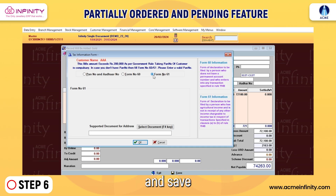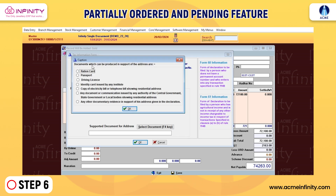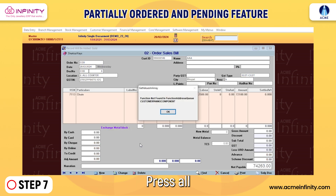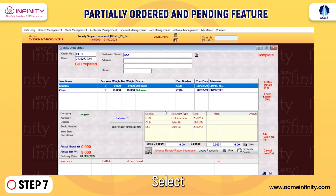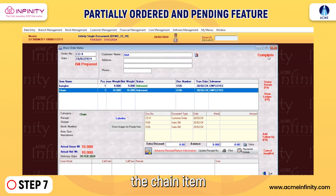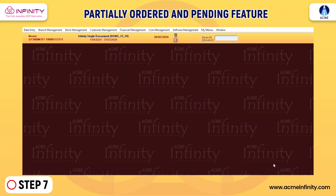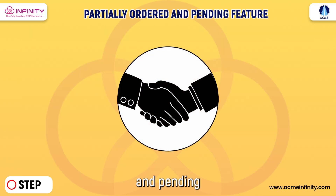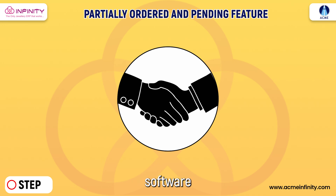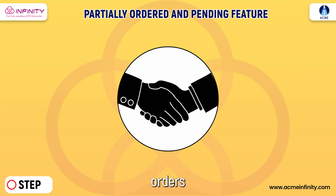Step 7: Press Alt+O, enter the order number — for example, GO9 — select the chain item, and complete the order. The partially ordered and pending feature in Acme Infinity Jewelry ERP software ensures you can manage and finalize incomplete customer orders effectively.